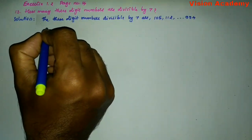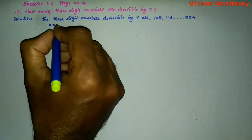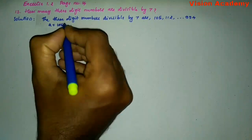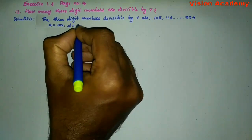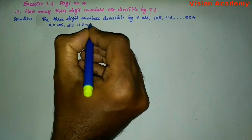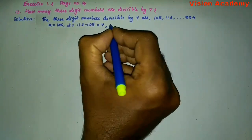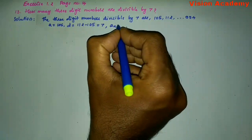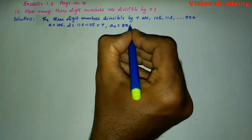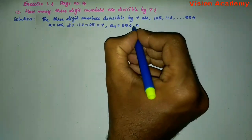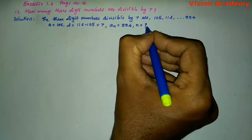Here, A = 105, and common difference D = 112 - 105 = 7. The nth term An = 994. We need to find N.